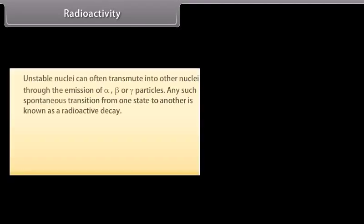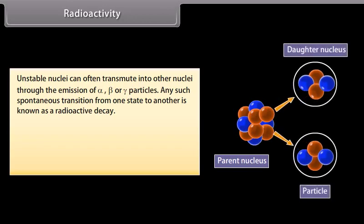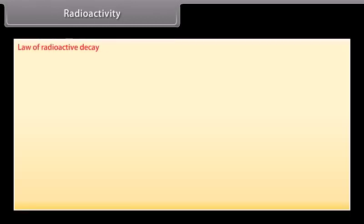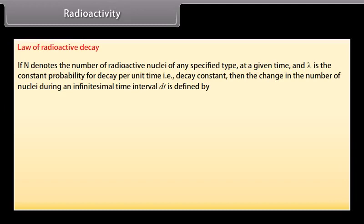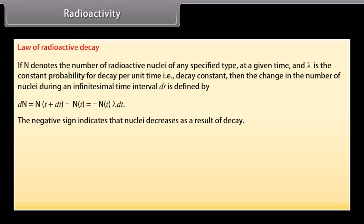Radioactivity. Unstable nuclei can often transmute into other nuclei through the emission of alpha, beta, or gamma particles. Any such spontaneous transition from one state to another is known as a radioactive decay. There are 3 types of radioactive decay: alpha decay, beta decay, and gamma decay. Law of radioactive decay: If N denotes the number of radioactive nuclei of any specified type at a given time and λ is the constant probability for decay per unit time, that is decay constant, then the change in the number of nuclei during an infinitesimal time interval dt is defined by dN is equal to N(t + dt) minus N(t), which is equal to minus N(t) λ dt. The negative sign indicates that nuclei decreases as a result of decay.